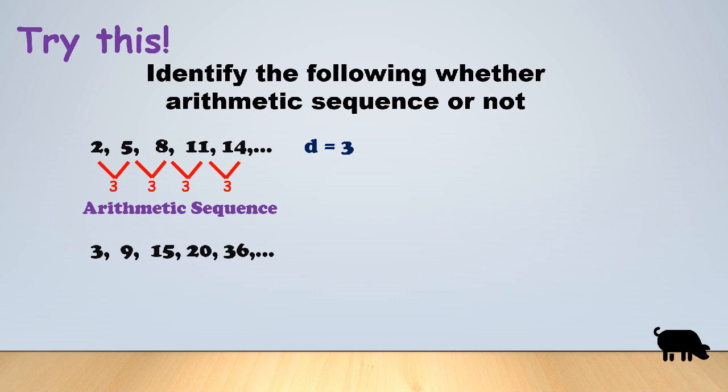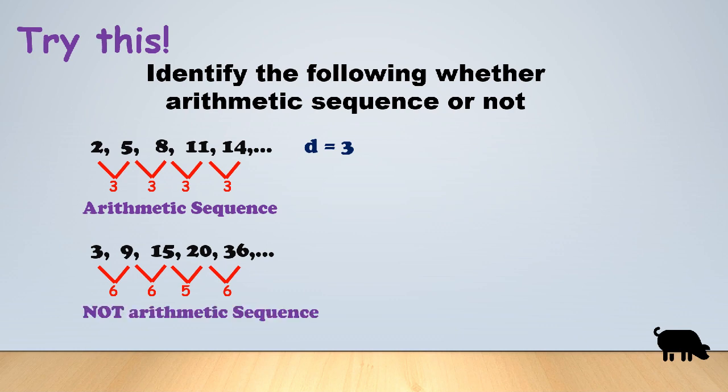Next: 3, 9, 15, 20, 36. Getting the differences: 6, 6, 5, 16 — not common to all. Therefore this is not an arithmetic sequence.